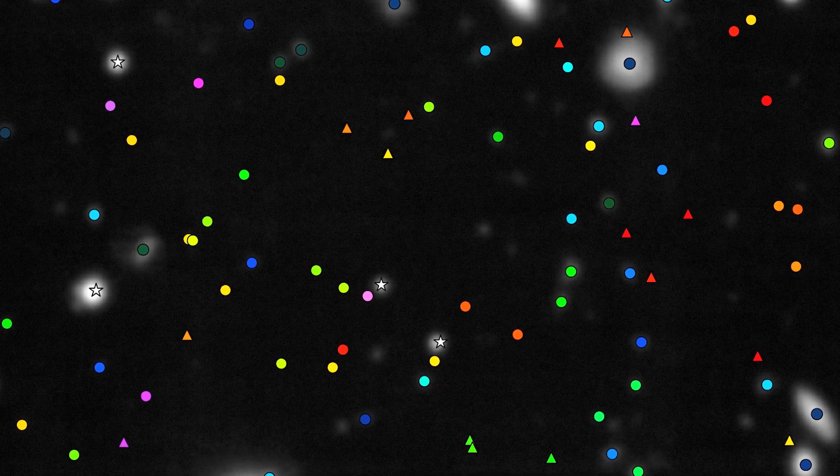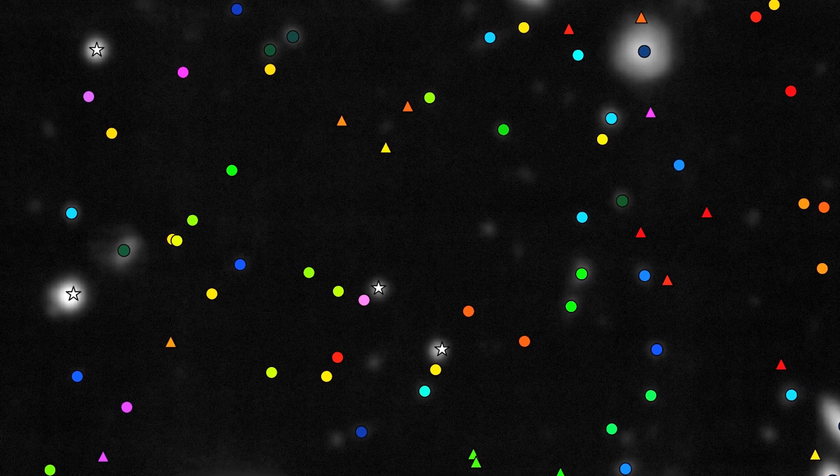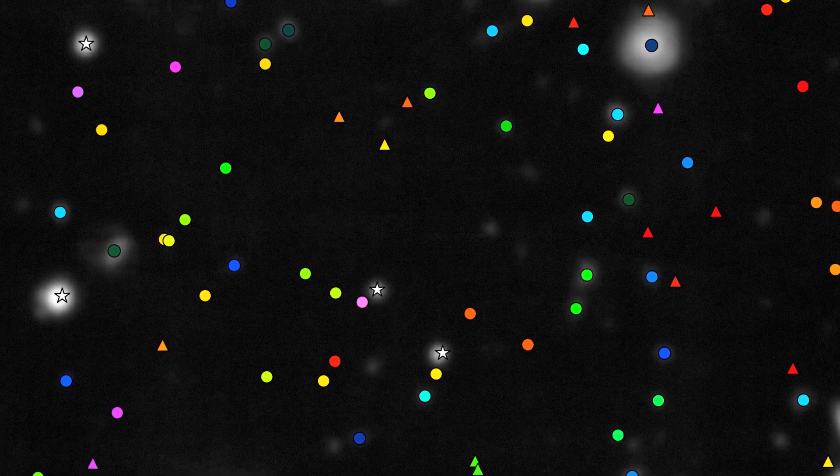Triangles are objects that are so faint that they couldn't be seen in the Hubble images at all, but are detected by MUSE.